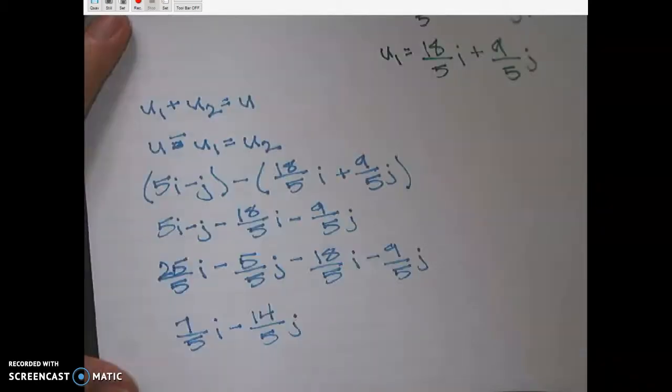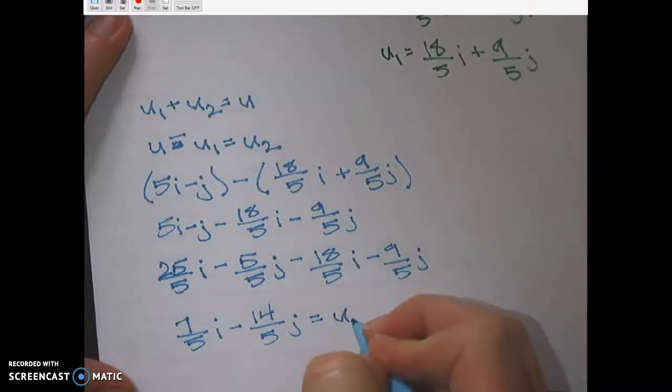So I went off to do that math a little bit. So remember, this is subtraction, so I needed to change the signs here, so minus minus, right? And then I went ahead and got a common denominator of 5 here. So I ended up with 7 fifths i minus 14 fifths j, and that's going to be the u2.